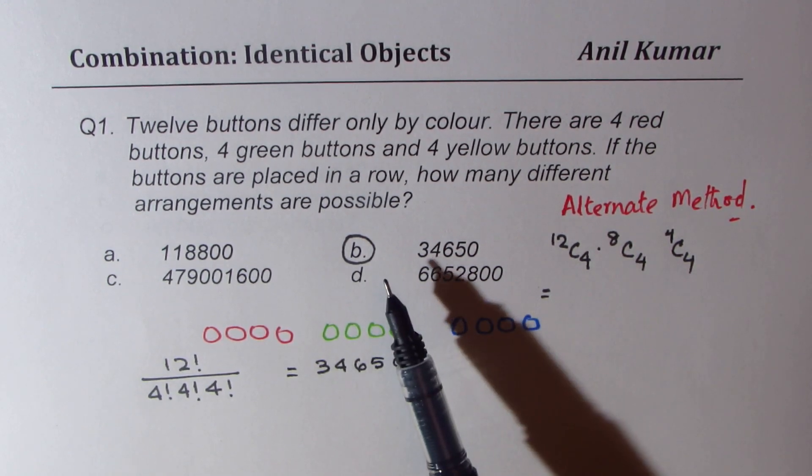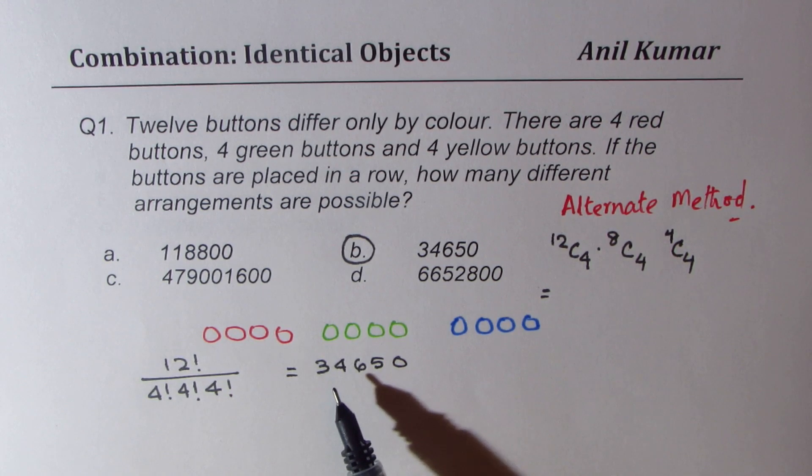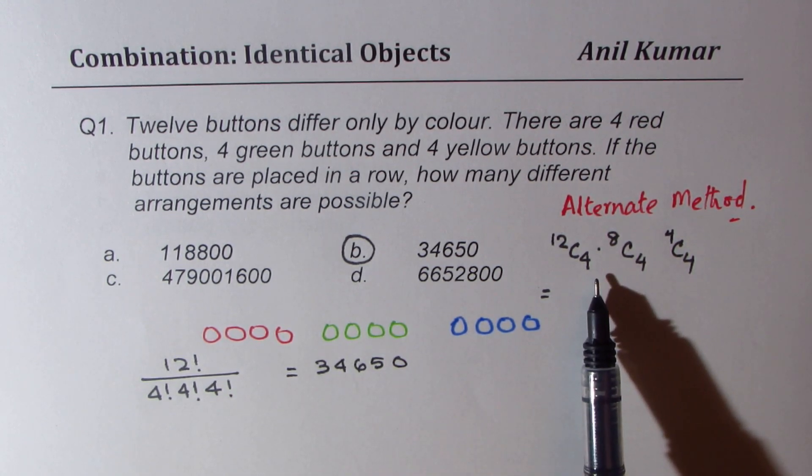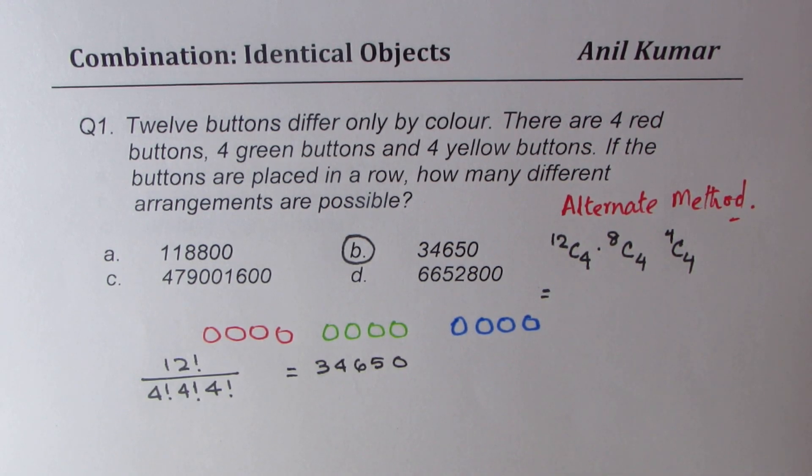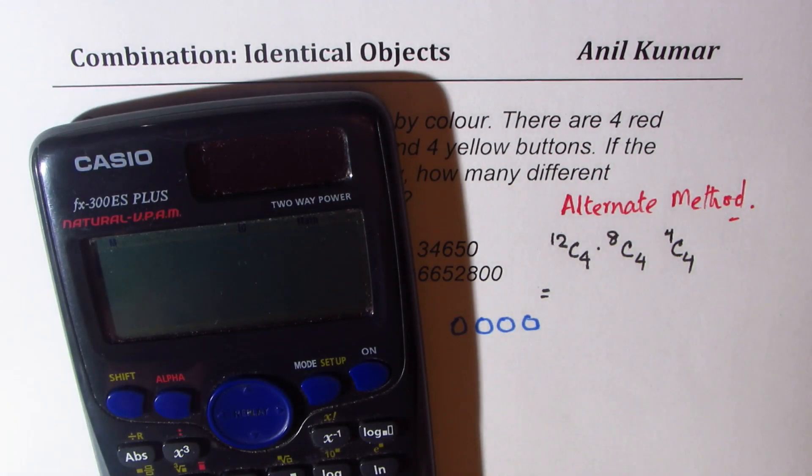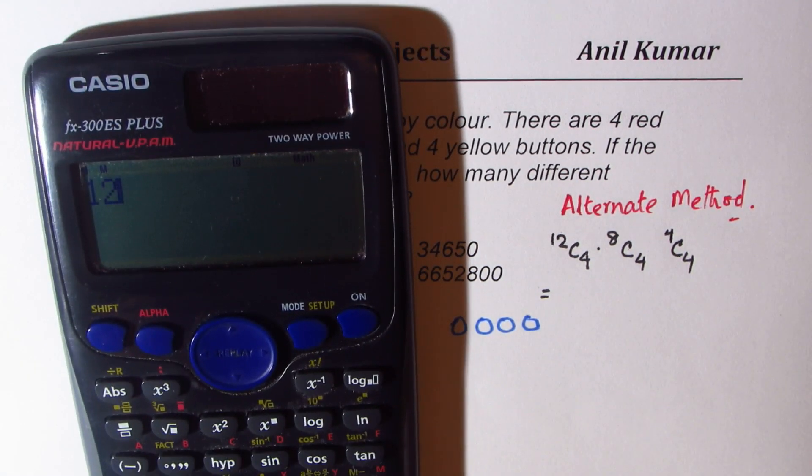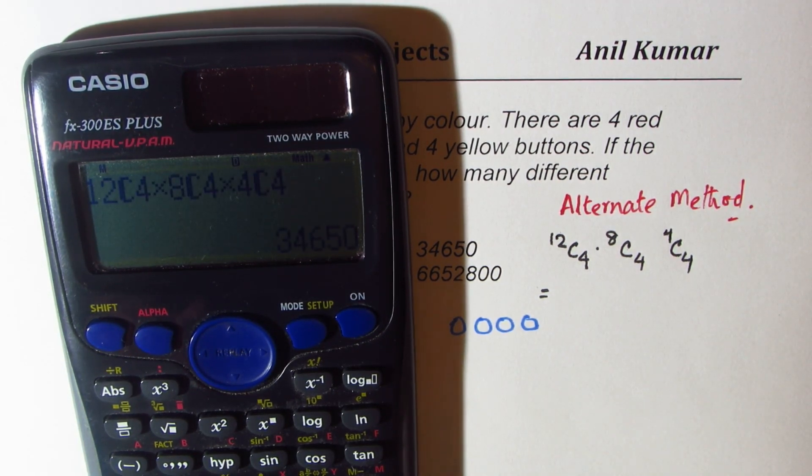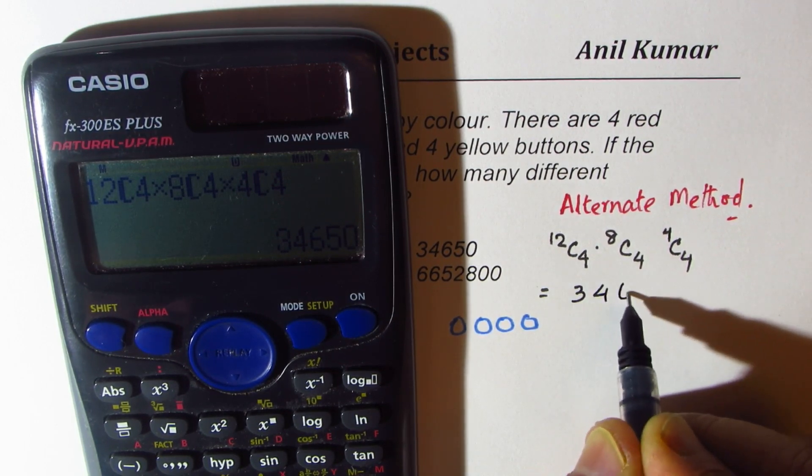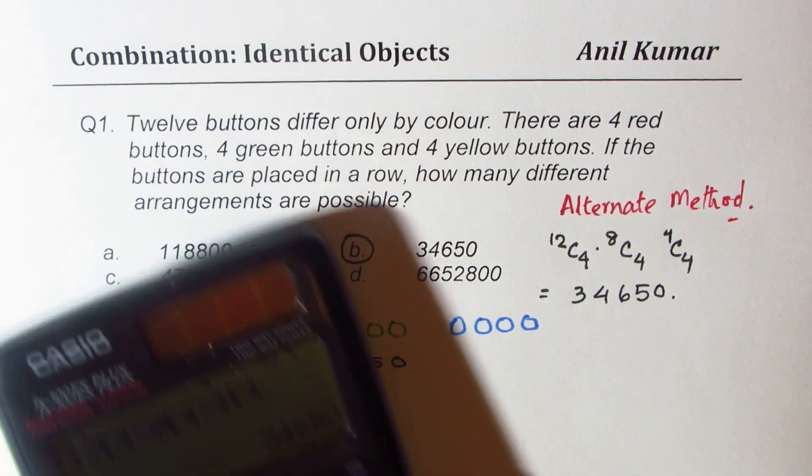Now this is not a very difficult question. This is straightforward. Many of you know. However, the method which I'm talking about is very useful. Let's try to calculate this value also. So what we have here is 12C4 times 8C4 times 4C4, which is 1. And we get the same result, which is 34,650.